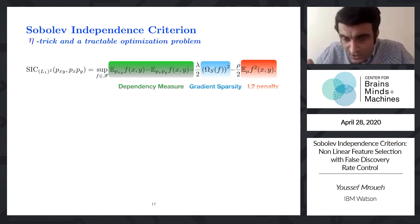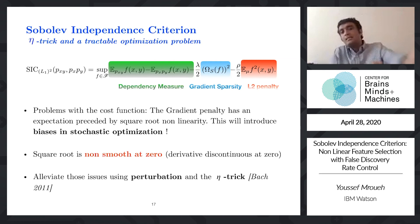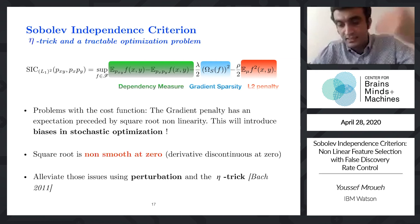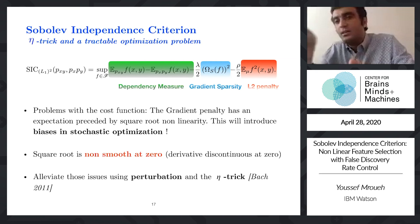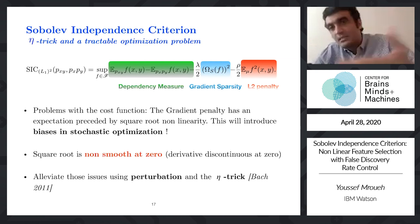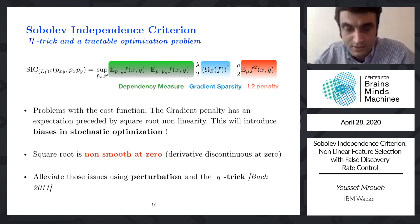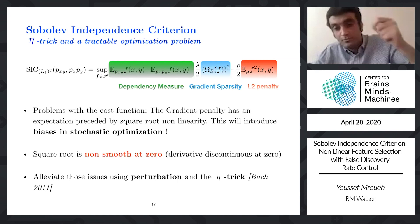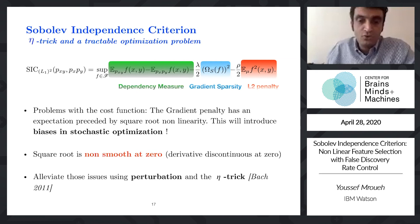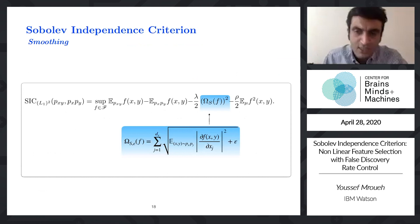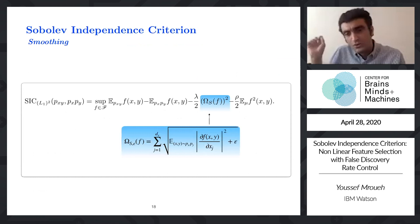Now, how to optimize this loss. The gradient penalty has an expectation preceded by a square root, which creates two issues for stochastic gradient descent. First, having a nonlinearity before the expectation gives biased estimates inside the square root when using mini-batches. Second, the square root is not smooth at zero — its derivative is discontinuous at zero. We'll alleviate these issues with two tricks. The first trick for non-smoothness: add a small perturbation epsilon and let epsilon go to zero.